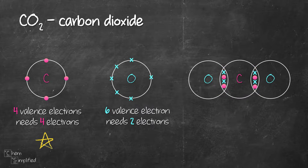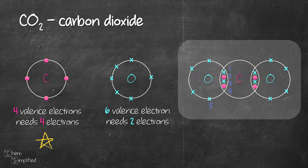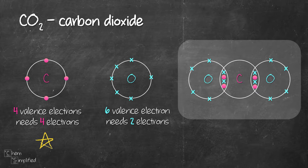As for the oxygen, we have used up two out of the six valence electrons, so we're going to place the remaining four electrons on each oxygen. With that, both oxygens are now octet. Carbon and oxygen both share four electrons, making a double bond between them. With that, we're done drawing the dot and cross diagram for CO2.